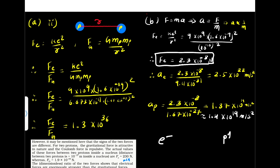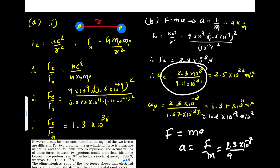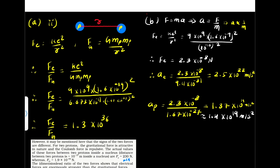The electron and proton exert this force on each other and accelerate. For the electron, A = F/M = (2.3 × 10⁻⁸) / (9.11 × 10⁻³¹) = 2.5 × 10²² m/s². For the proton, the acceleration is 1.37 × 10¹⁹ m/s². The magnitude of the force is equal for both, but their masses are different, so their accelerations differ.